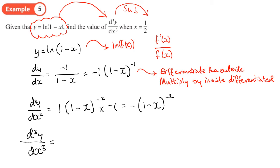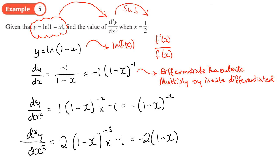Then we differentiate a third time. Again using the chain rule: differentiate the outside to get 2, then −3 on (1 − x), times by the inside differentiated, so two times by negative one. We end up with −2(1 − x)^(−3). You may begin to see a pattern here — we might even be able to predict the next derivative without having to differentiate, because there's some sort of pattern emerging.